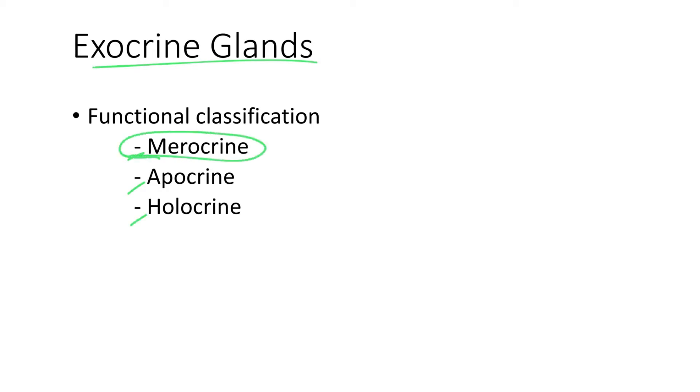Merocrine glands are the most popular one. It's the one that we find in the great majority of our body. Merocrine glands are also called ecrine glands. Now, what characterizes a merocrine gland?